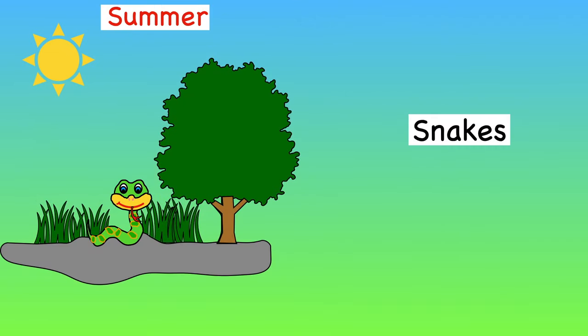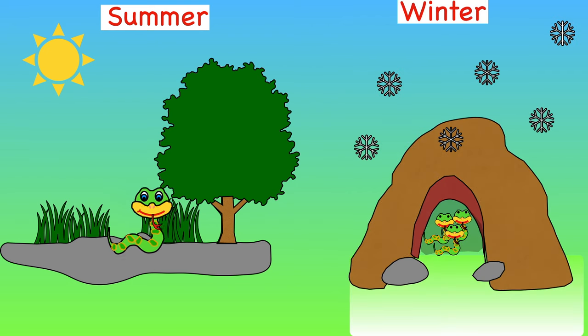Snakes enjoy lying in the long grass but when it gets very cold some types of snakes gather together in caves or dens. There could be more than 8,000 snakes in one den.